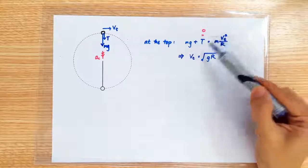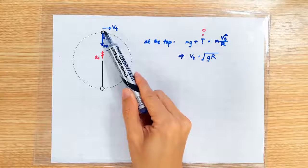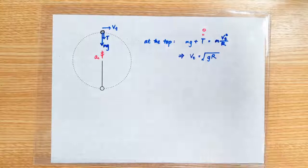So the little m doesn't matter. Rearrange the equation and you get the minimum speed of the stone at the top is square root of g times r.